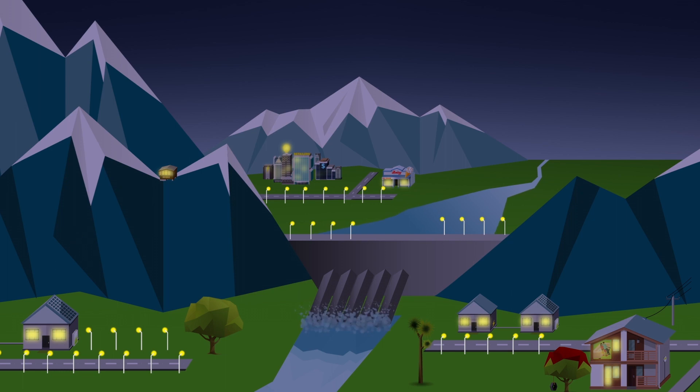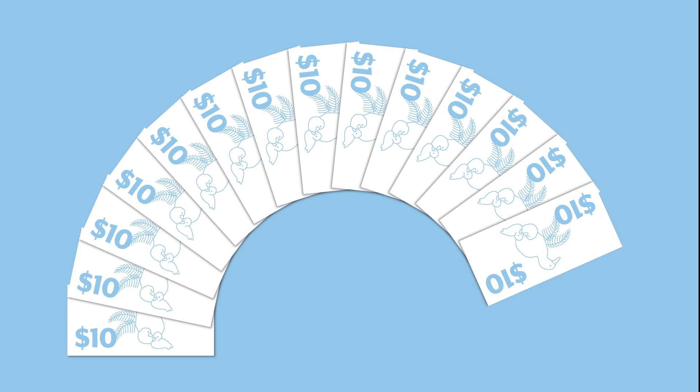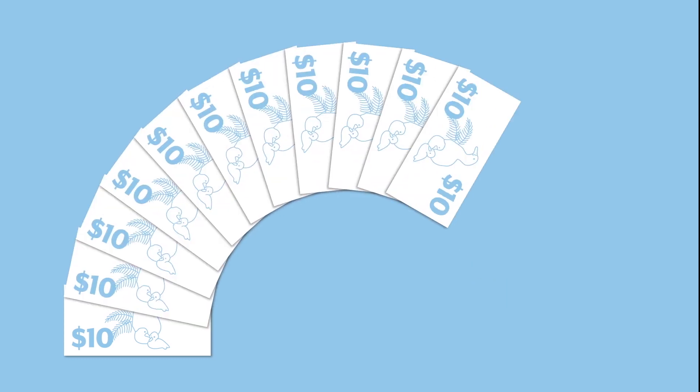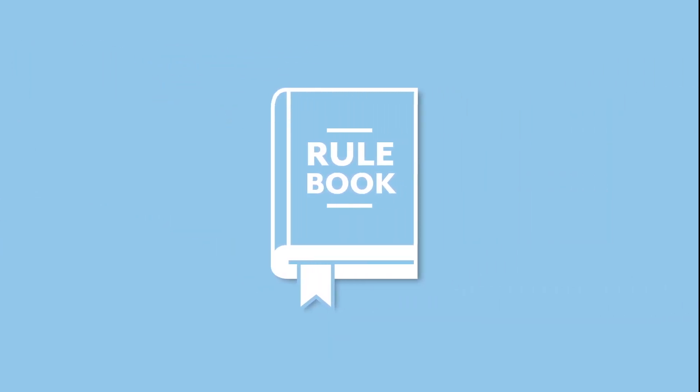And worst case scenario, if we get dry weather and the lake levels get really low, a conservation campaign is launched and we're all asked to use less electricity. There are costs to companies if that happens too, so they work really hard to avoid this. It's all written into the rule book.